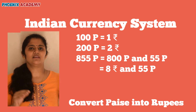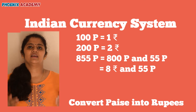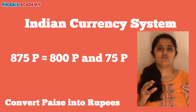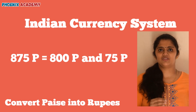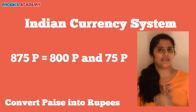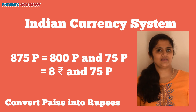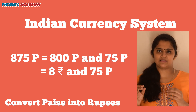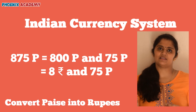800 paise is equal to 8 rupees. Then what is left? 55 paise. What is 875 paise in rupees? So 875 paise is equal to 8 rupees and 75 paise.